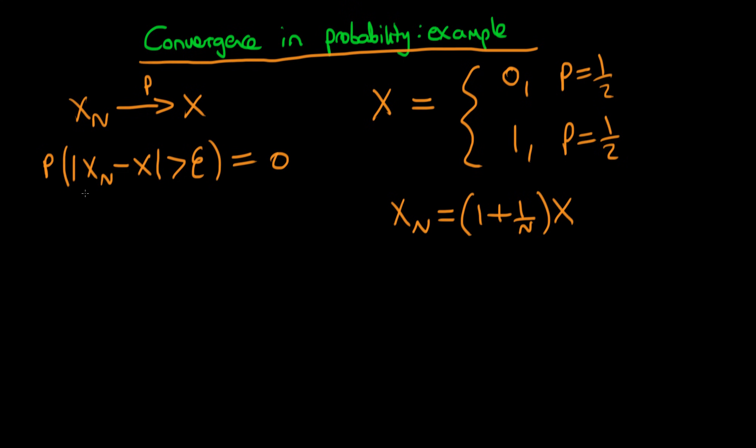So first of all, in order to demonstrate this, we actually need to derive this quantity Xn minus X. Well, that's quite easy to do given our Xn here. If we just take over one of the X's, we just get that Xn minus X is equal to one over n times X. And moreover, because our random variable X we've chosen to be positive, we know that the modulus of Xn minus X has got to be equal to one over n times X.